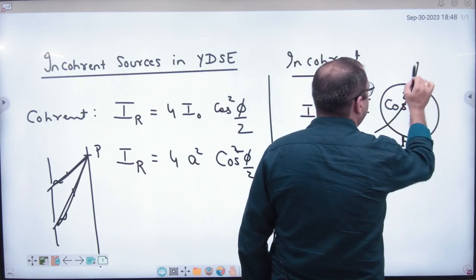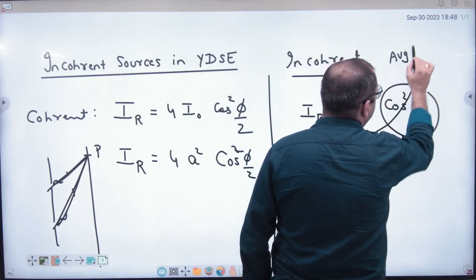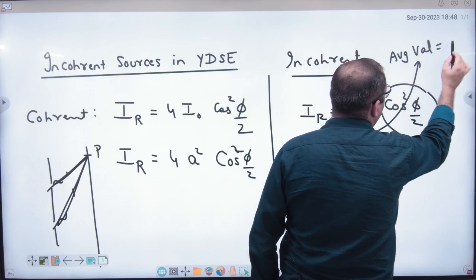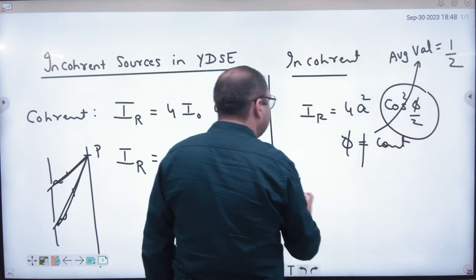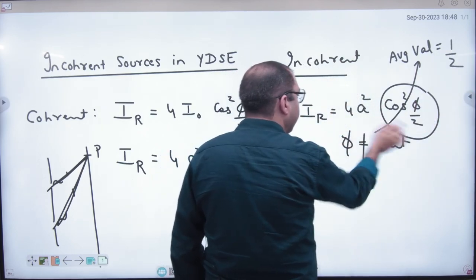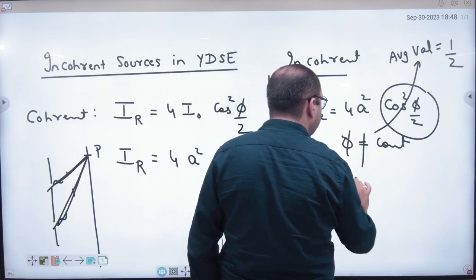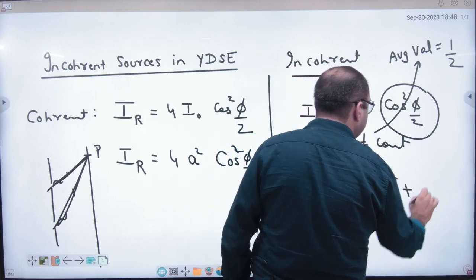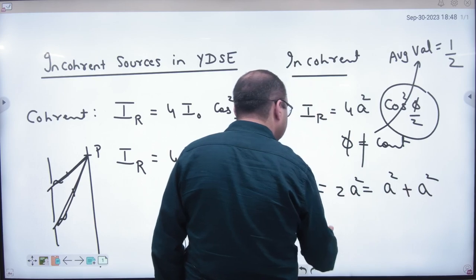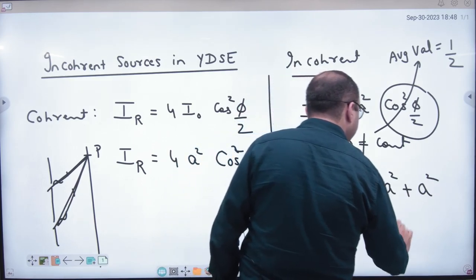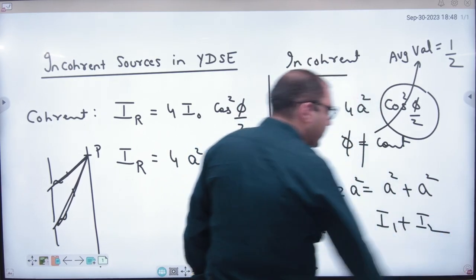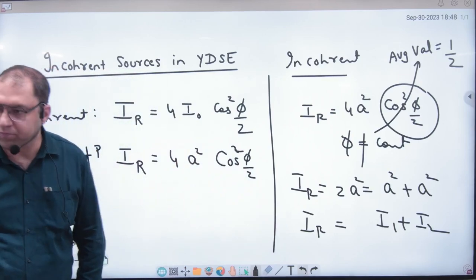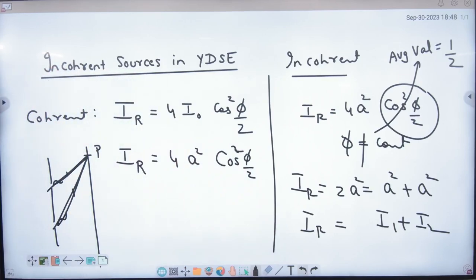Then the average value of cos square φ by 2, what is the average value of cos square φ by 2? Half. So what is the value of resultant intensity? Half into 4 is 2A square. That means A square plus A square. That means I₁ plus I₂. Note this formula. I₁ plus I₂. So the resultant intensity is I₁ plus I₂.